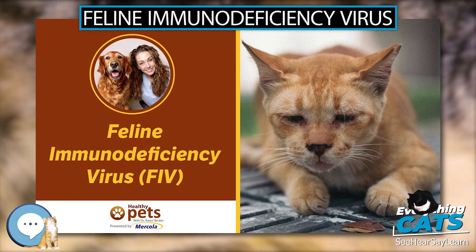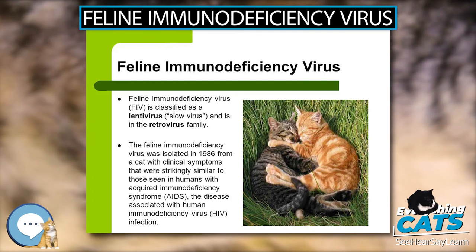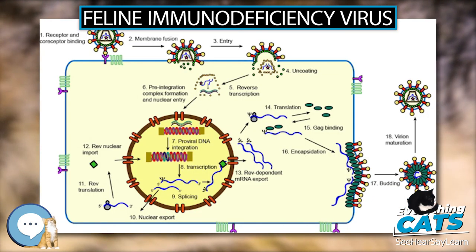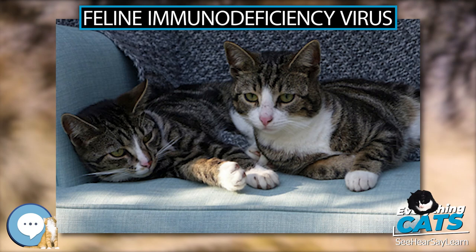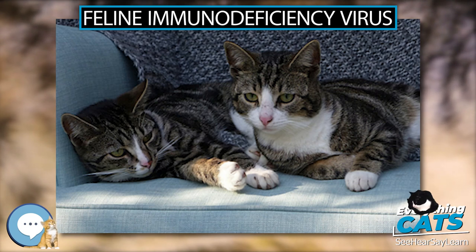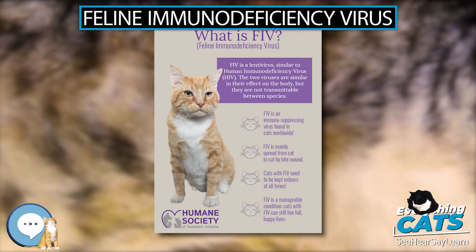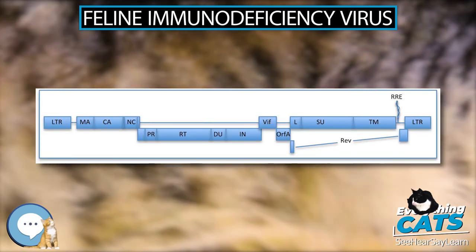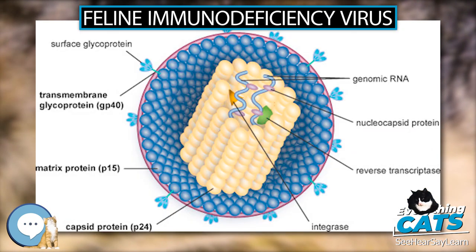Like HIV-1, FIV has been engineered into a viral vector for gene therapy. Like other lentiviral vectors, FIV vectors integrate into the chromosome of the host cell, where they can generate long-term stable transgene expression. Furthermore, the vectors can be used on both dividing and non-dividing cells. FIV vectors could potentially be used to treat neurological disorders like Parkinson's disease, and have already been used for transferrin research, which may find use as gene therapy for cancer.